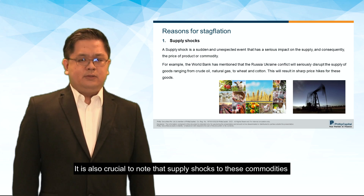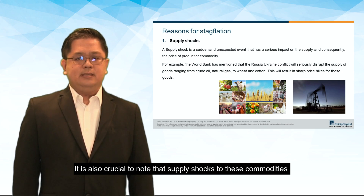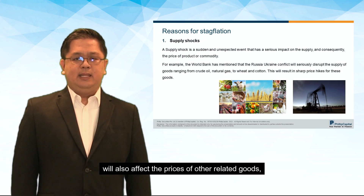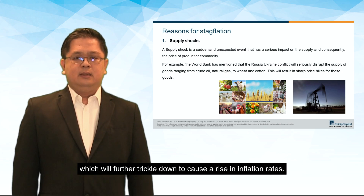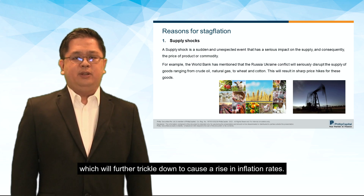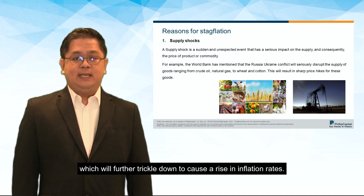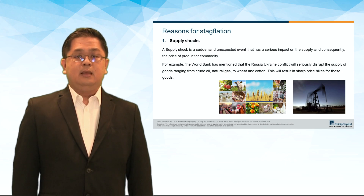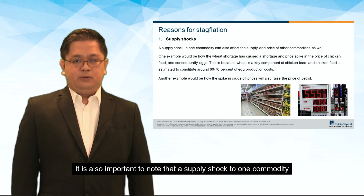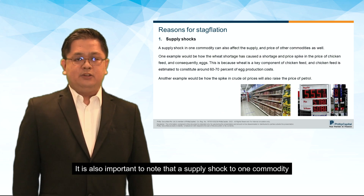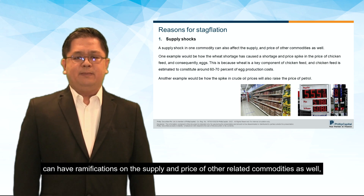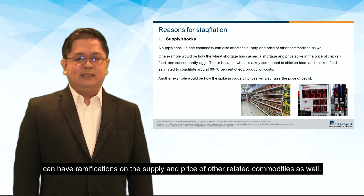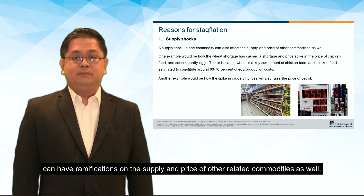It is also crucial to note that supply shocks to these commodities will also affect the prices of other related goods, which will further trickle down to cause a rise in inflation rates. A supply shock to one commodity can have ramifications on the supply and price of other related commodities as well.